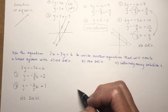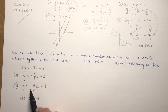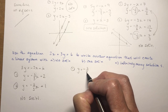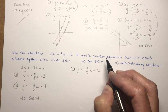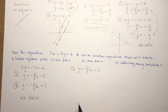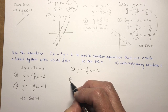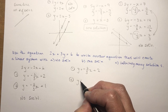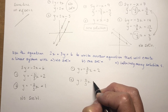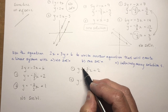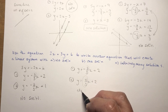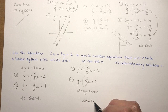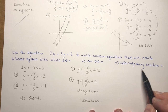For one solution, all you have to do is change the slope. Using the same first equation in y = mx + b format, write a second equation with a different slope - for example, y = 2/3 x + 2. You can also change the y-intercept; anything with a different slope will give one solution.